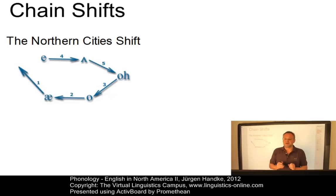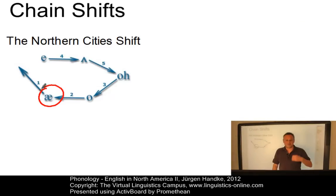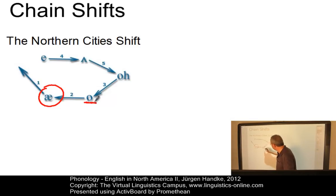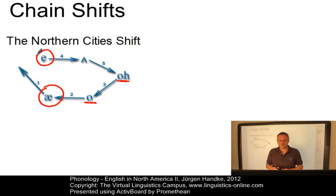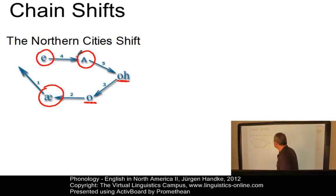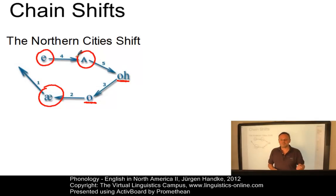The Northern Cities Shift is a chain shift affecting the short vowels of English spoken in the United States regions bordering the Great Lakes. It is triggered by the general raising of A in words like 'man,' 'that,' and 'back,' followed by a fronting of OR and a lowering of R. Then, quite interestingly, the E in words such as 'get,' 'yes,' and 'red' is centralized, so the result will be something like 'yes,' 'red,' and 'get.' This pushes the wedge vowel out of the way, backing it so that words such as 'but' become more retracted.